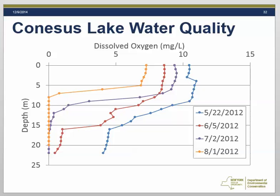This slide shows just a few dissolved oxygen profiles from 2012. Similar to the last plot, zero is the lake surface and measurements go down into the lake. In May, we see well-oxygenated upper waters, but down towards the bottom the dissolved oxygen is around 5 milligrams per liter, shown in the blue line. As we move from June in red to July in purple, we see the dissolved oxygen dropping to zero at the bottom of the lake. By August, shown in orange, there is no dissolved oxygen in the lower 15 or so meters of the lake.